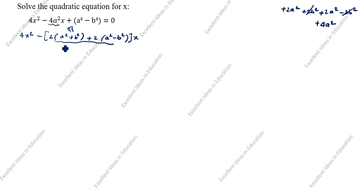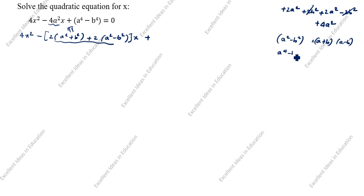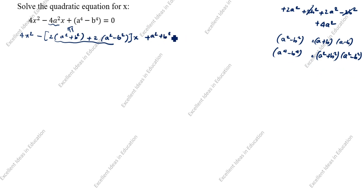Now we split the constant term a⁴ - b⁴. Using the formula a² - b² = (a + b)(a - b), we get a⁴ - b⁴ = (a² + b²)(a² - b²). So the equation becomes 4x² - (2a² + b²)x - (2a² - b²)x + (a² + b²)(a² - b²) = 0.